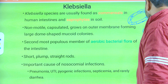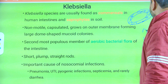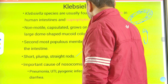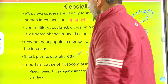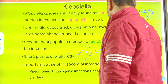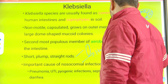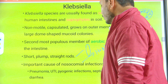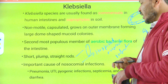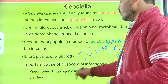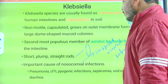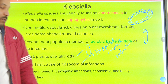They are short but straight rods. Importantly, they are a significant cause of nosocomial (hospital-acquired) infections. They cause pneumonia, UTI (urinary tract infections), pyogenic (pus-forming) infections, especially after burns, septicemia (presence of microbes in blood), and rarely diarrhea.